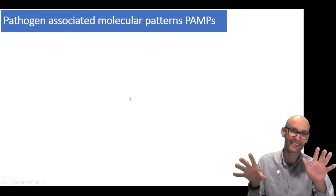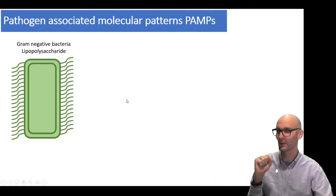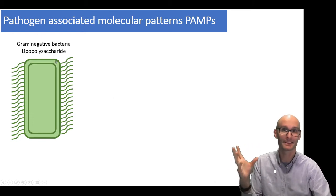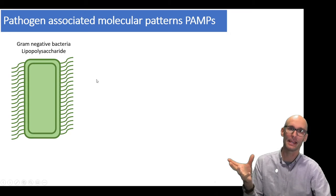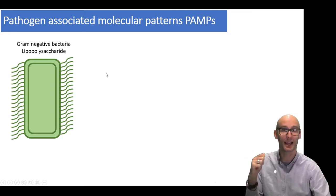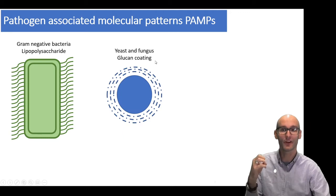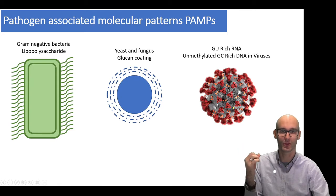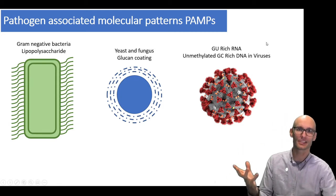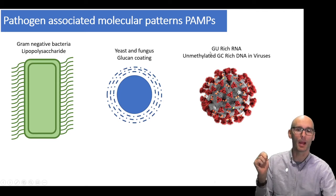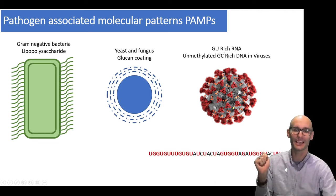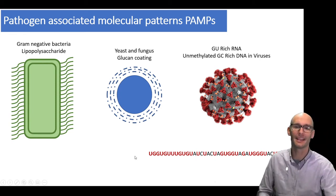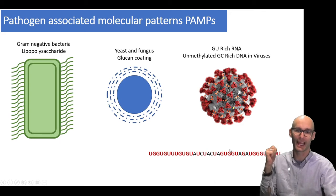Let's just have a look at a few of them. This isn't all of them, just some examples. On gram-negative bacteria, we have lipopolysaccharide, and they're active as a PAMP. On yeast and fungus, we have a glucan coating that our body can detect and respond to. In viruses such as coronavirus, there might be weird RNA, GU-rich or GC-rich. If we look at a segment of the coronavirus, we can see GU, GGU, GU. We can see high GU-rich RNA here in the coronavirus.